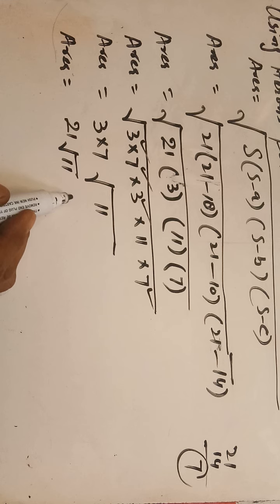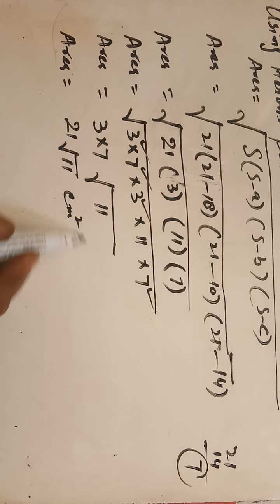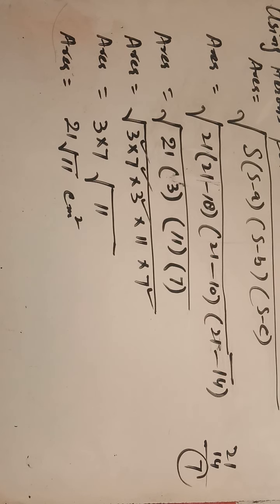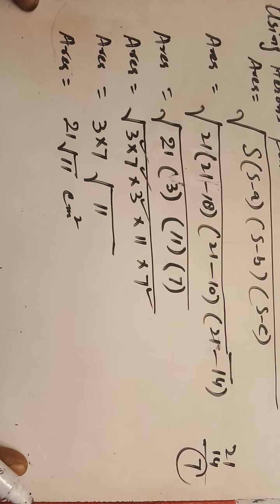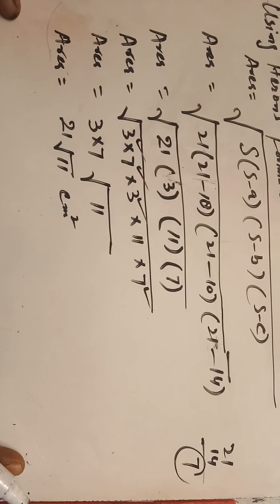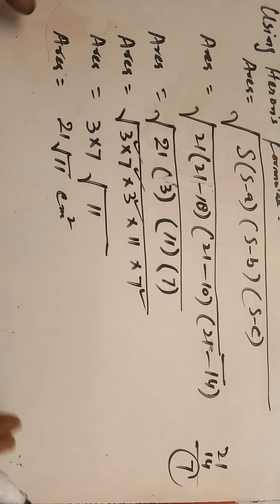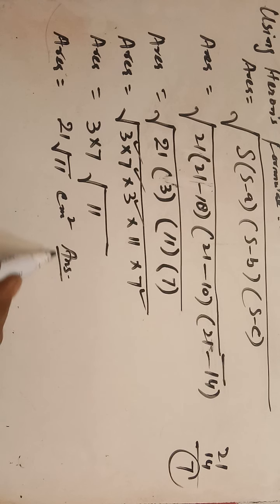Therefore the area equals 21 root 11 square centimeters. So the area of the triangle is 21 root 11 square centimeters. Thank you.